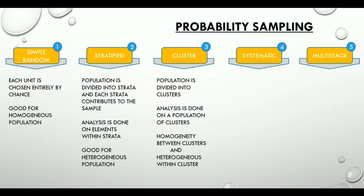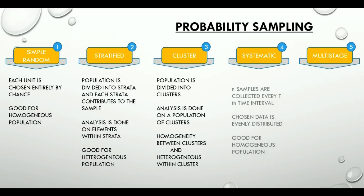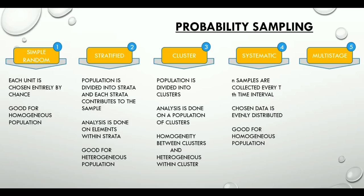Systematic sampling: this is a kind of sampling method where n number of samples are collected every day at a time interval, in a systematic manner.